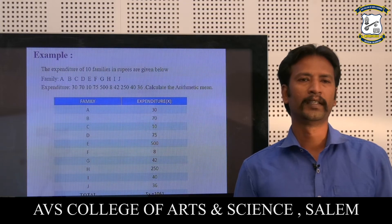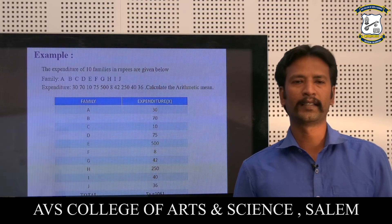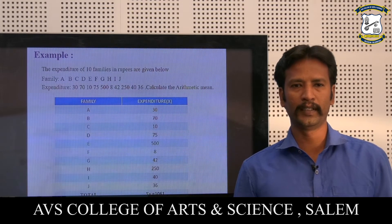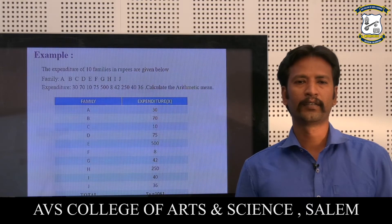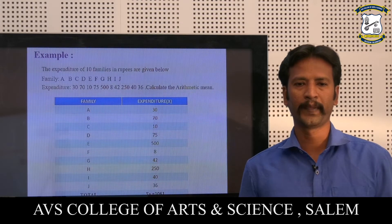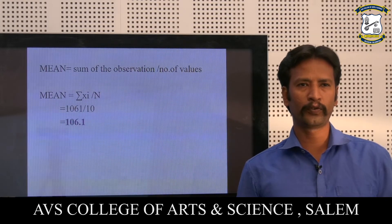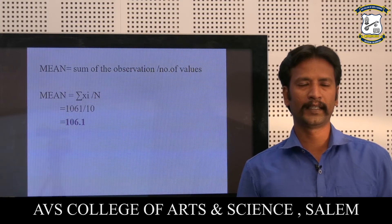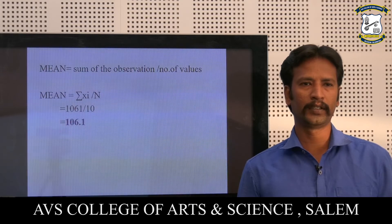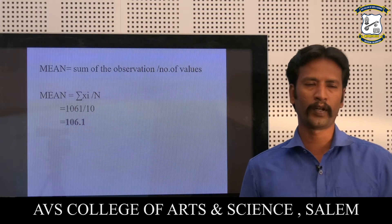First, we calculate the arithmetic mean. We frame a table with the first column as family values (A, B, C, D, etc.) and the second column as expenditure values (30, 70, 10, 75, etc.). The summation X equals 1061. Using the formula mean = ΣXi / N, that is 1061 divided by 10, the mean equals 106.1. This is the mean value.